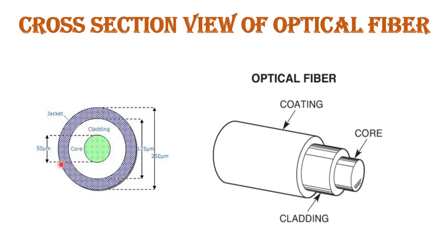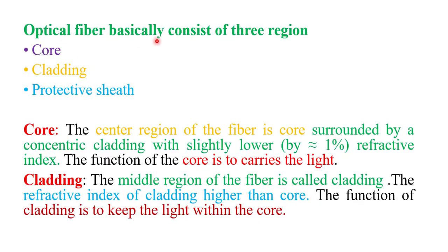The diameter of the core is generally 50 micrometers. If the core is 50 micrometers, the cladding is 125 micrometers in diameter and the coating is 250 micrometers. The function of the core is to propagate the light. The function of the buffer coating is to protect both core and cladding from the outer environment and interference. The core — the center region of the fiber — is surrounded by a concentric cladding with a slightly lower refractive index, meaning the core is made of material with a higher refractive index than the cladding.